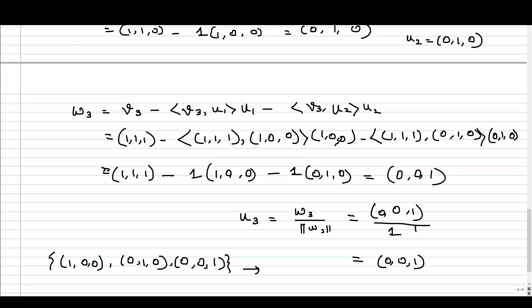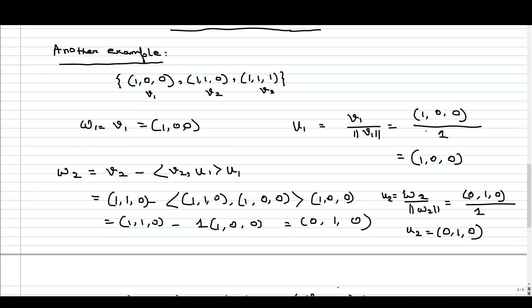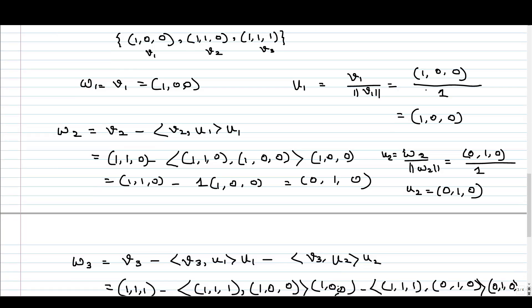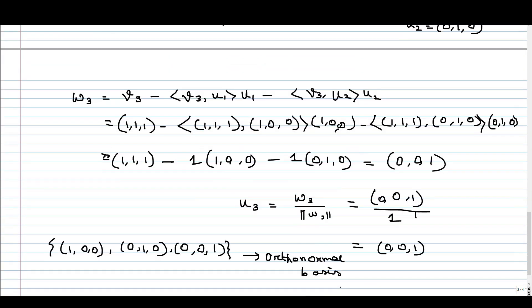If we calculate the inner product of any two vectors, you will get 0, and if we calculate the norm of each vector, the norm of each vector is 1. So it's an orthonormal basis corresponding to the basis which we have started with, and we follow this Gram-Schmidt method, Gram-Schmidt algorithm, and we will get this set of vectors which forms an orthonormal basis. Thank you.